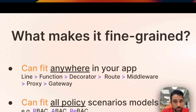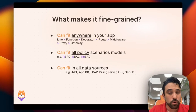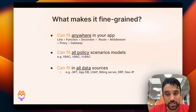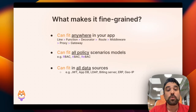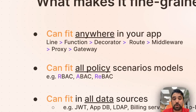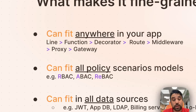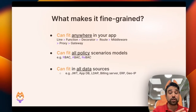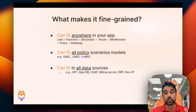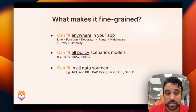What makes it fine-grained though? How do we make sure that what we're building actually meets the conditions? Here are the three things we need to think about. We want this to fit anywhere in our app, meaning it doesn't matter where we're enforcing — single line of code, function, decorator, route, middleware, proxy, gateway — inside our code and external to it. We should be able to enforce our policies.